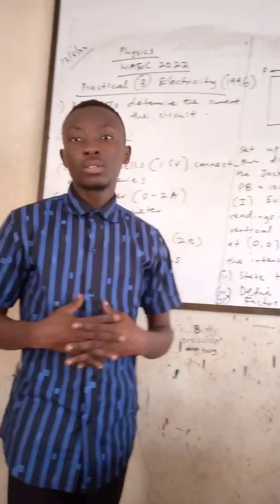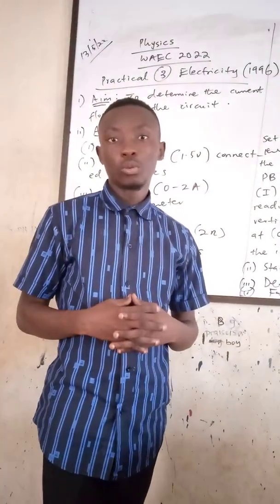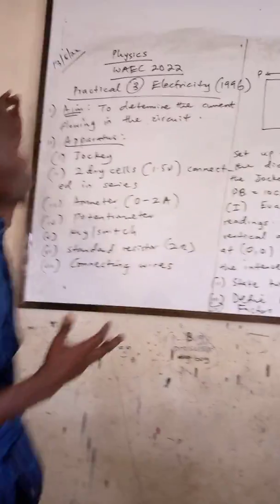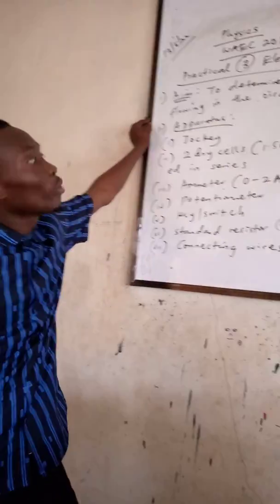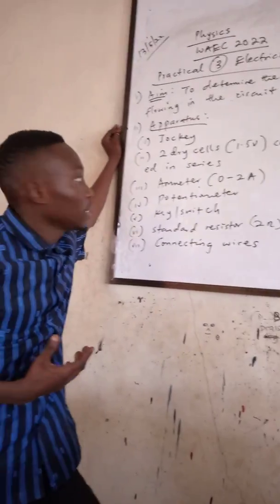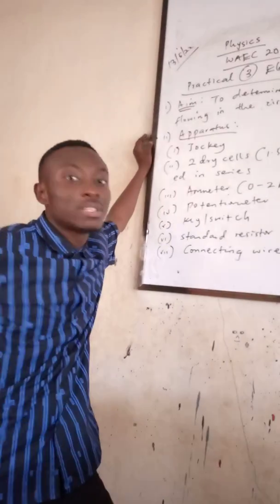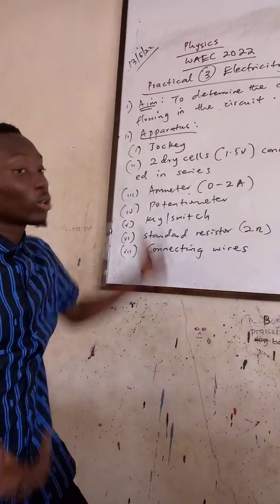Based on what WAEC presented us, what we should provide, we are going to determine the current flowing in a circuit. The apparatus that WAEC gave us for this day is number one, a jockey.